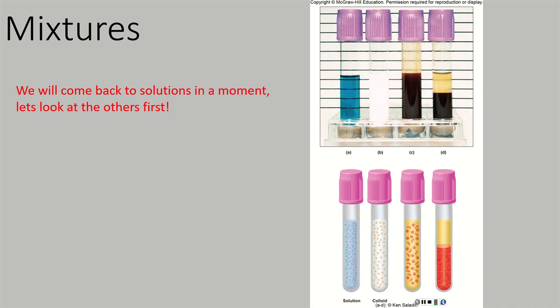Now let's look at something called a mixture, and we'll look at some examples before talking about the different types. Mixtures are two or more components physically intermixed. There are no chemical bonds holding these mixtures together — they are simply two or more components physically intermixed. The different types of mixtures are: a solution, a colloid, and a suspension.